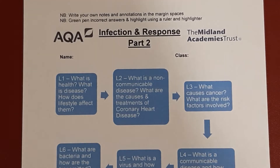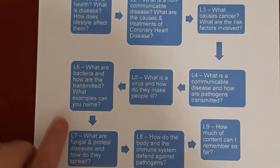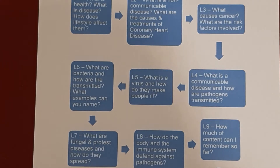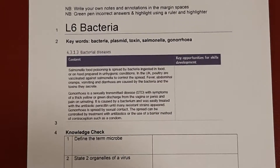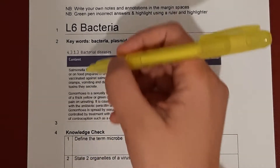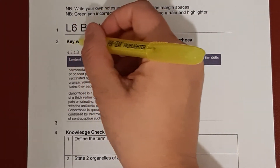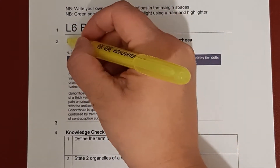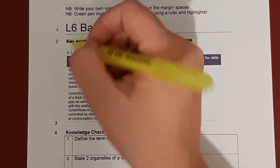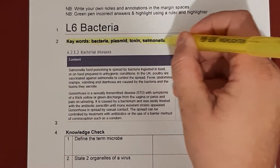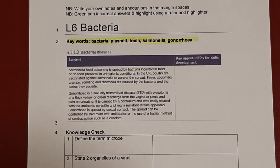Hello and welcome to GCSE Infection Response, Part 2. This is Mrs Castanera and we are currently on Lesson 6: What are bacteria and how are they transmitted? What examples can you name? The title is Lesson 6, Bacteria. Our keywords for this lesson are bacteria, plasmid, toxin, salmonella and gonorrhea. By the end of the lesson you will know what all of those mean.